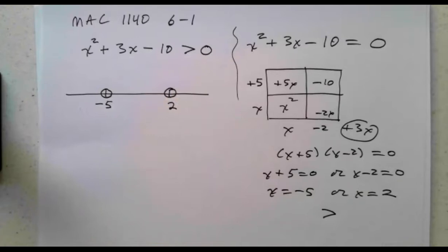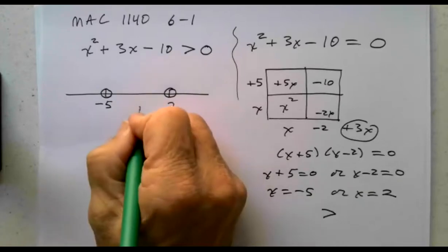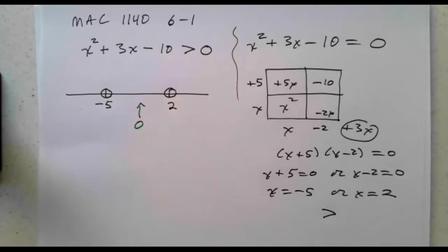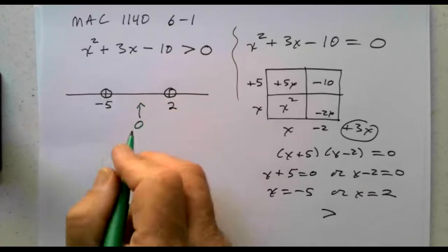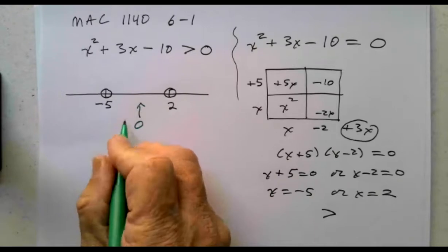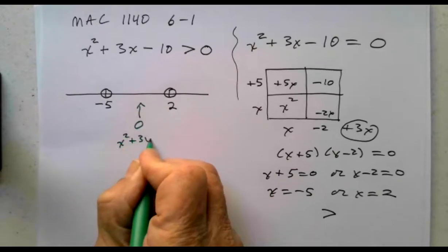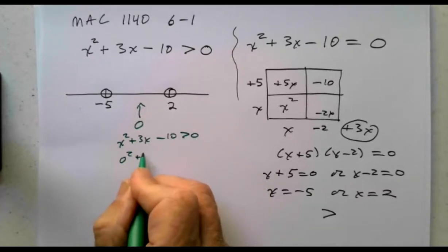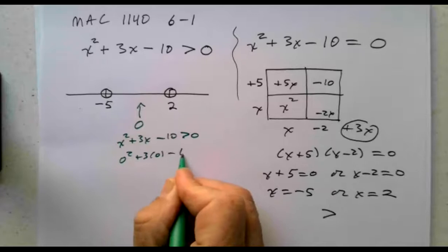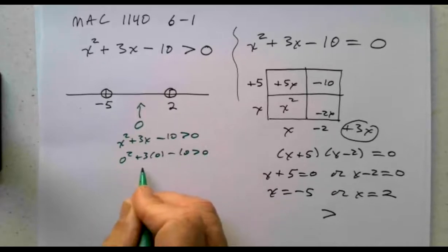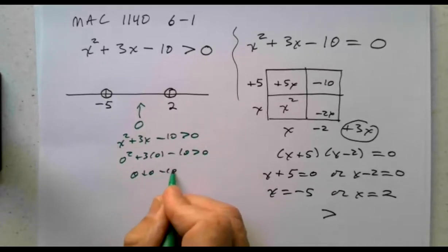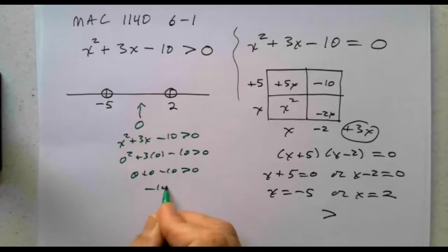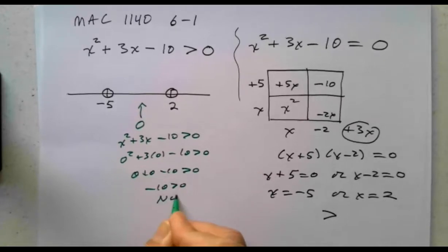Now I need to test numbers in each interval to see if the inequality holds. Between negative 5 and 2, the number 0 is located there, so that's the first one to check. Plugging into x squared plus 3x minus 10: is 0 squared plus 3 times 0 minus 10 greater than 0? That gives 0 plus 0 minus 10, so is negative 10 greater than 0? No. So I'm not going to shade that interval.